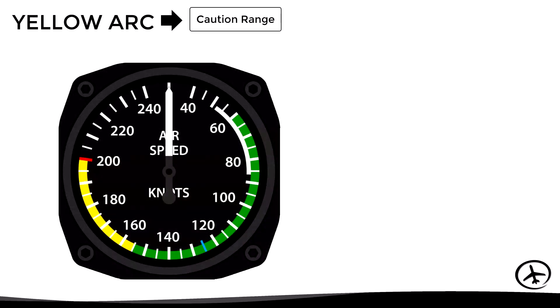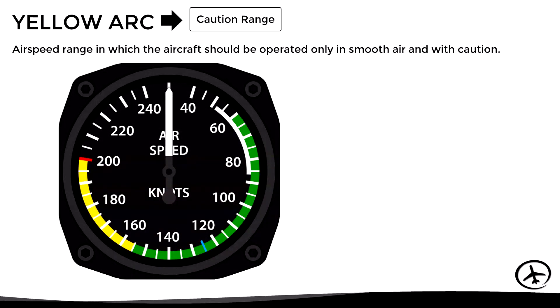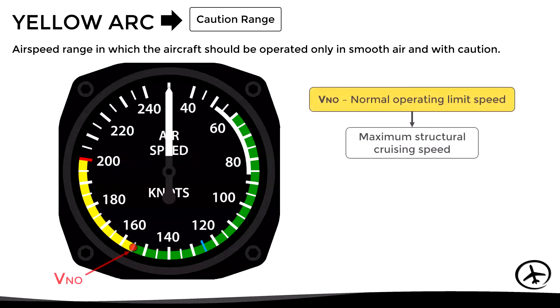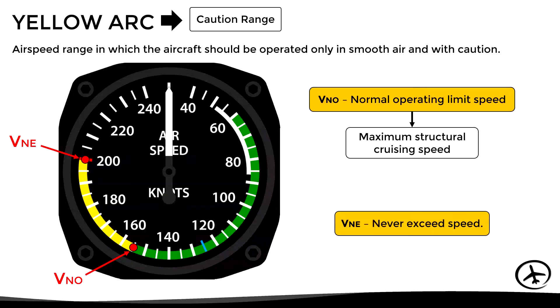The yellow arc represents the caution range — the speed range in which the aircraft should be operated only in smooth air and with caution, especially during maneuvers or when moving the flight controls. The yellow arc starts right at VNO, and beyond this speed the structural tolerances are more restrictive. The speed at which the yellow arc ends is the VNE, the never-exceed speed. If the aircraft flies above VNE it can experience permanent structural damage.